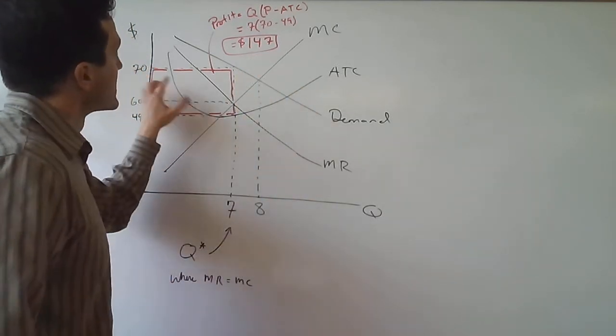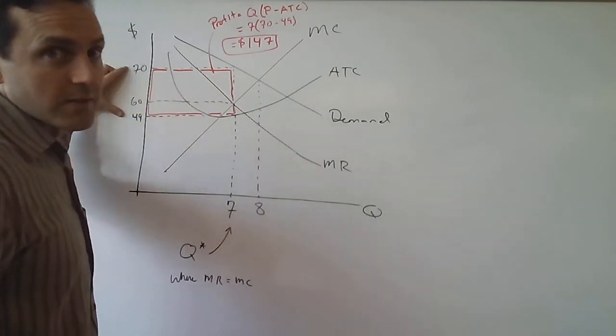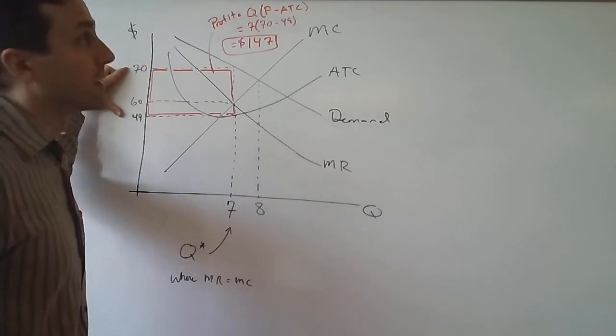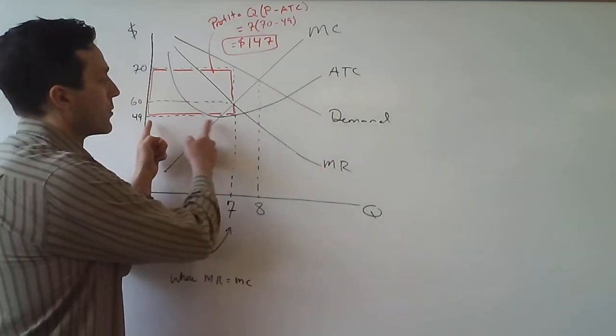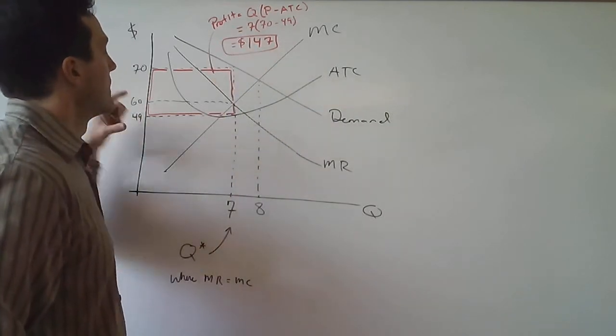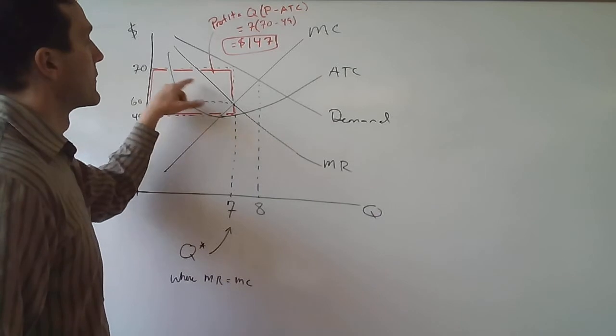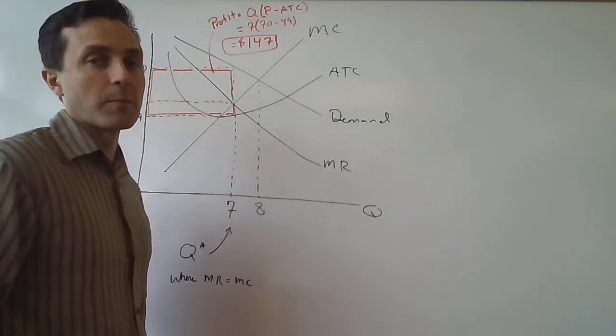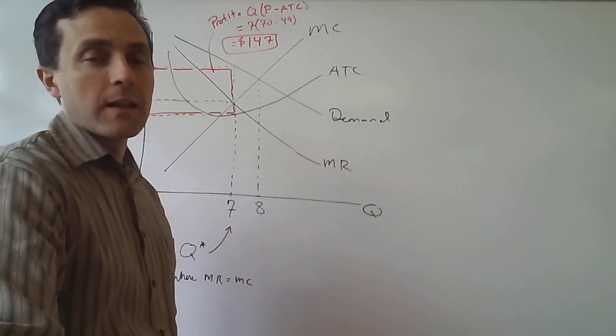And that is actually the area of this rectangle here, because the vertical dimension of the rectangle, 70 minus 49, that is the profits per unit. And then the horizontal dimension, that's the quantity, which is seven. So we have seven times $21 vertically, and that is the area of the rectangle, which equals this firm's profit in this monopoly.